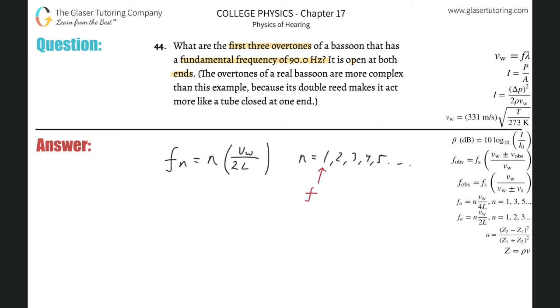So the fundamental frequency is the first harmonic, and then every harmonic after that is considered an overtone. So the first overtone would be the second harmonic. The second overtone would be the third harmonic, and the third overtone would be the fourth harmonic.